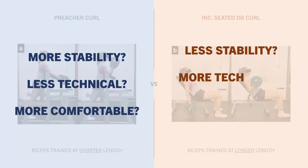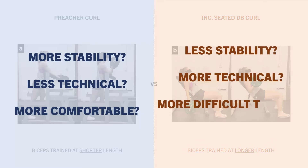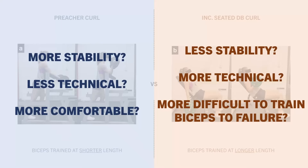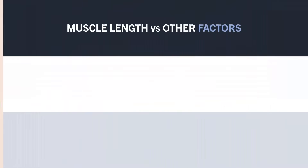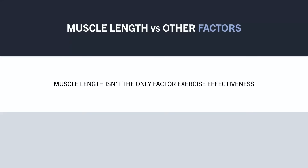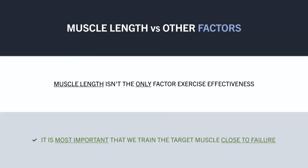Whereas the incline curls may be a little less stable, a little more technically demanding, and overall harder to train the biceps to true failure. In any case, the point is that muscle length isn't the only factor influencing the effectiveness of an exercise. It seems to be much more important to ensure you are training close to failure, with the target muscle being what limits performance of each set.